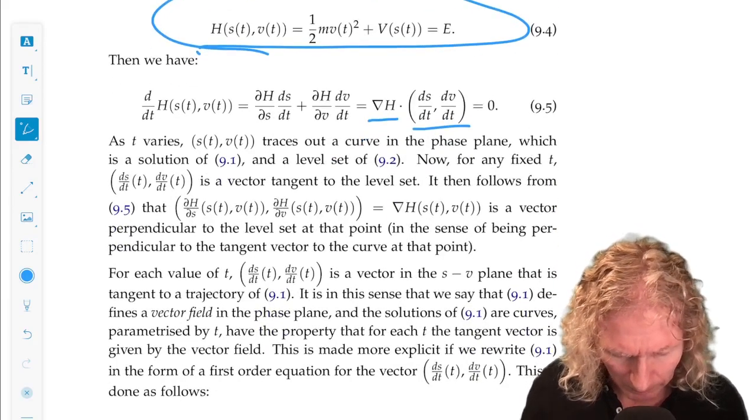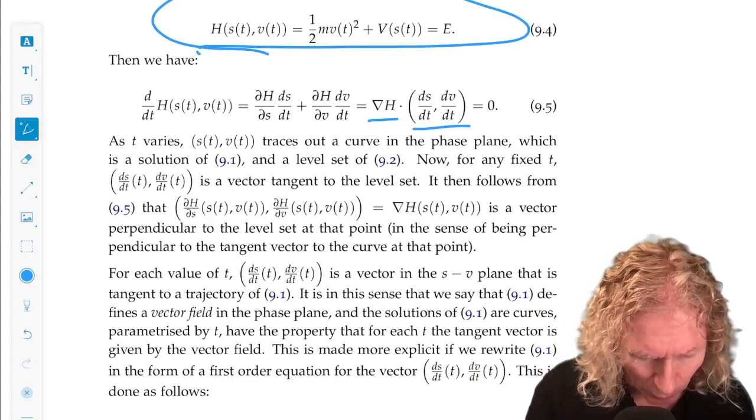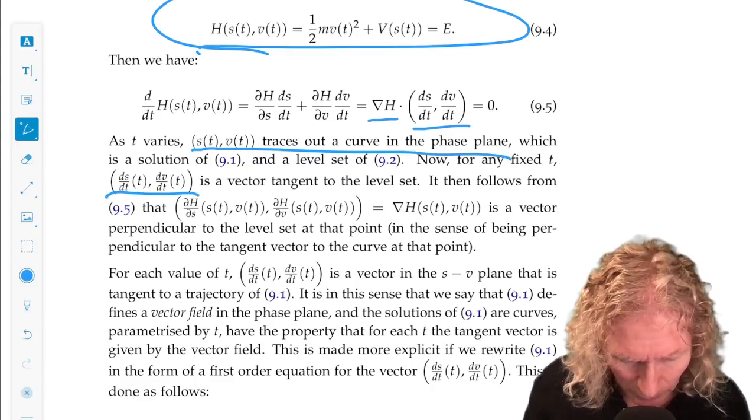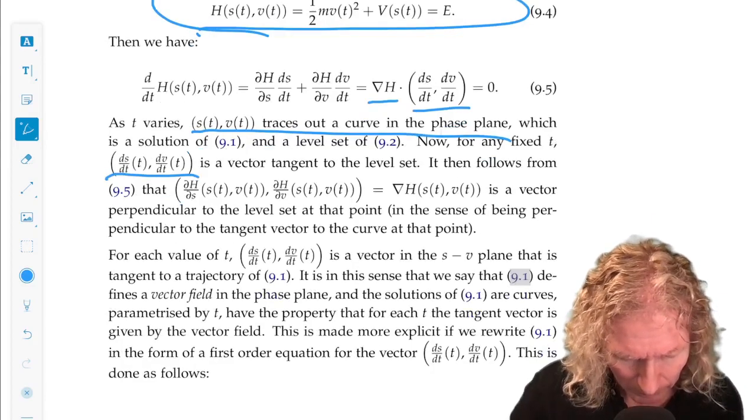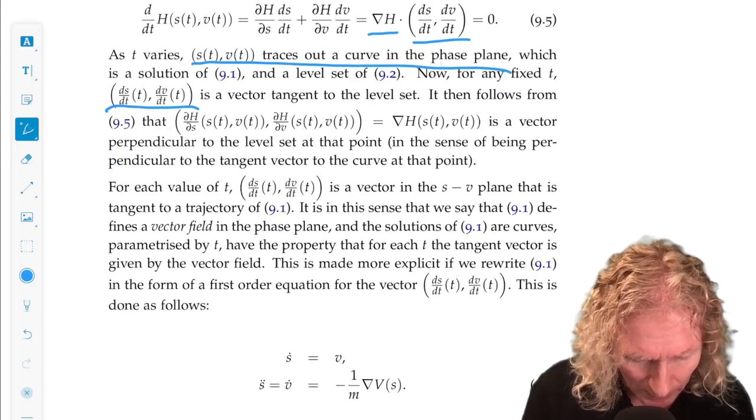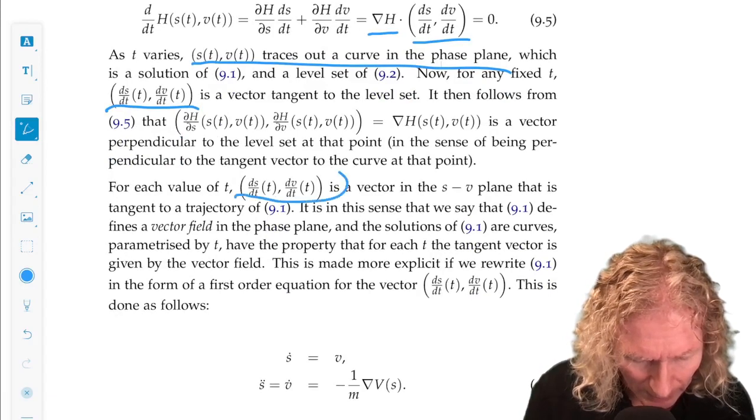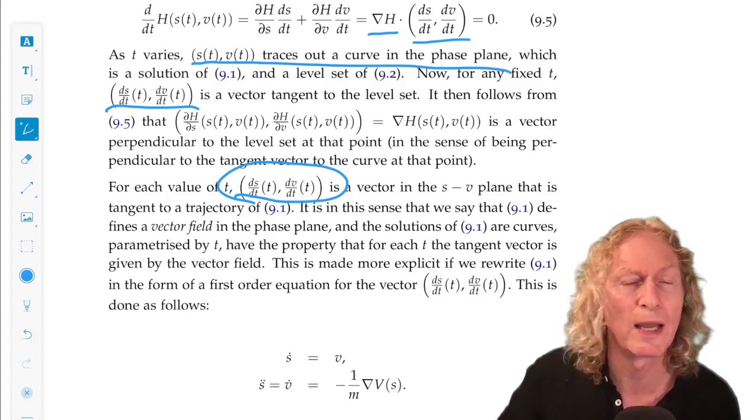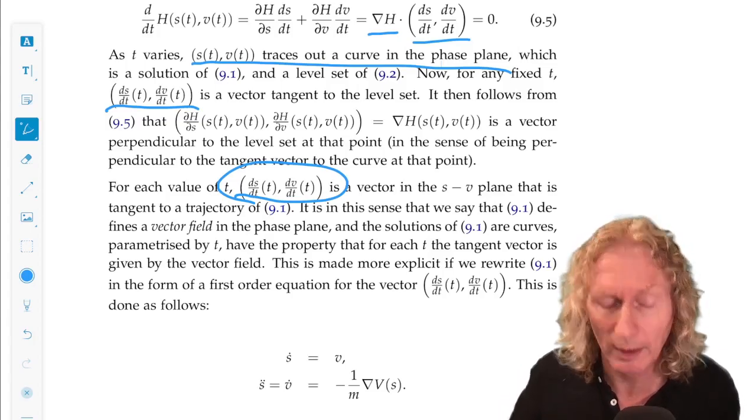So s of t, v of t traces out a curve in the phase plane. This is a tangent vector to the curve. So ds dt, dv dt actually is a vector field on the phase plane. At every point, we have a vector.